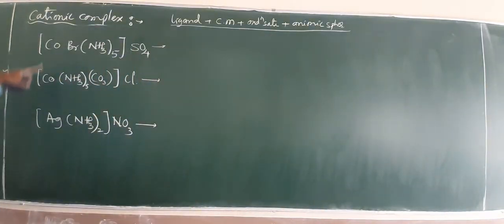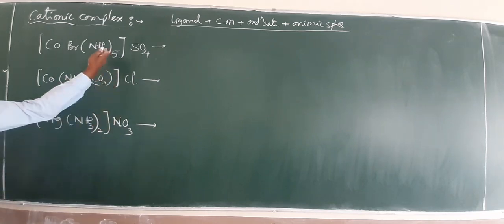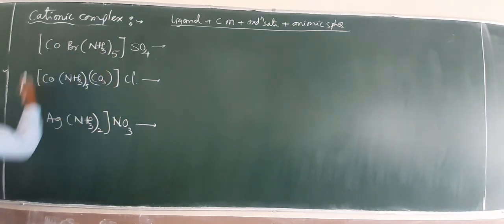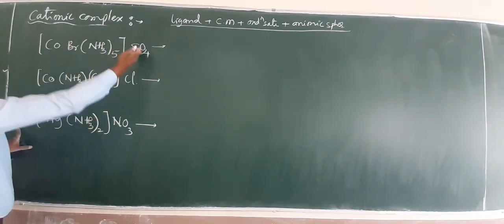So before to start, these are examples of cationics. How can you find out cationics? Square brackets are always first to the ionic spheres.